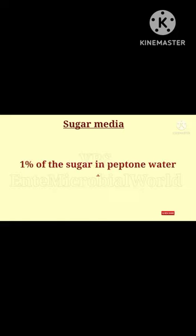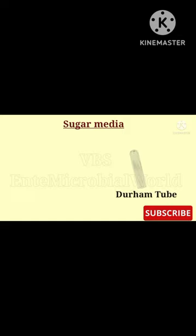The usual sugar media consists of 1% of the sugar in peptone water along with an appropriate indicator. A small tube called Durham's tube is kept inverted in the sugar tube to detect gas production.